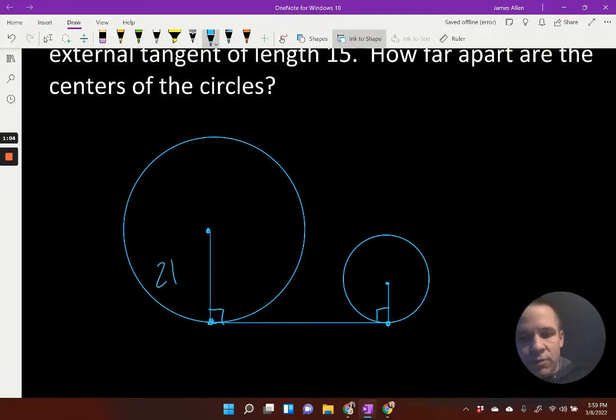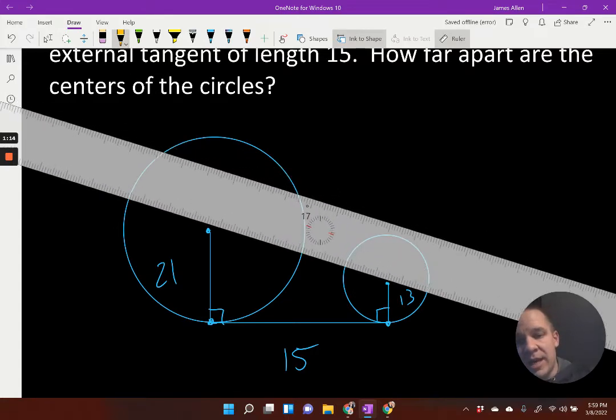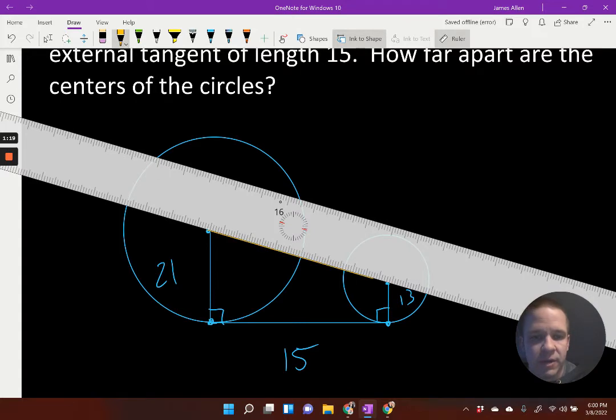Now I know that this is 21 and this is 13, and my external tangent is 15. How can I go about solving this? Well, perhaps we should also go ahead and connect our centers, and I'll put that in yellow here because that's what I want to solve for. This is my end goal here.